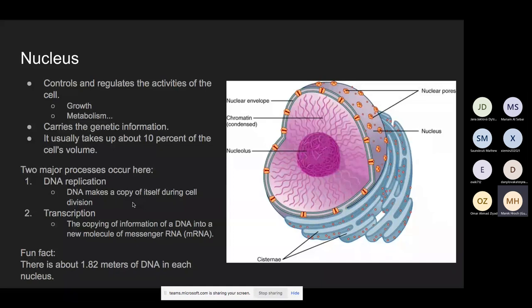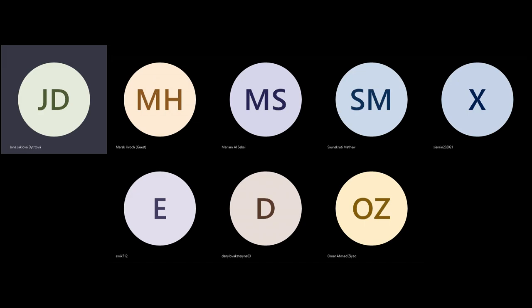The two main processes in the nucleus are DNA replication and transcription — the copying of information from DNA into a new molecule of mRNA. And finally a fun fact: if you were to untangle all of the DNA in each nucleus, you would get about 1.82 meters of DNA. If you multiply that by the number of cells in the human body, you'll get a lot of meters. Actually, if we put together all the DNA, we have approximately 2 meters in one cell, and if we put all these together we will reach the distance from the sun to the earth, combining all the cells in the average human body.